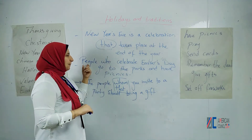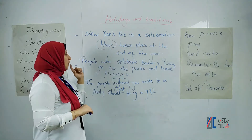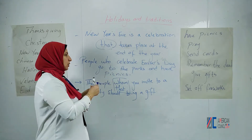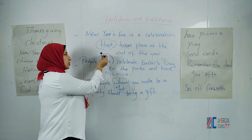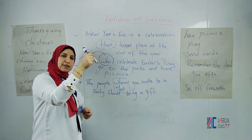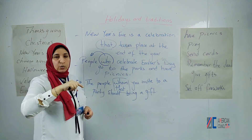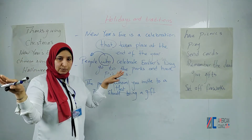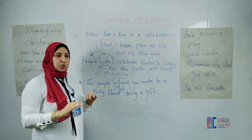For example: people who celebrate Easter go to the parks and have picnics. Here we have 'who', which is referring to people. That's the same reason we use 'who' — to avoid using two separate sentences that both contain the word 'people'. So it's just put together using 'who'.